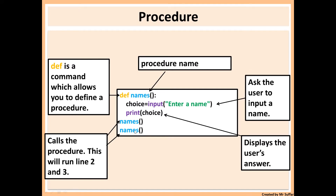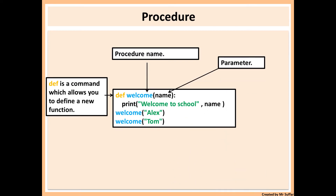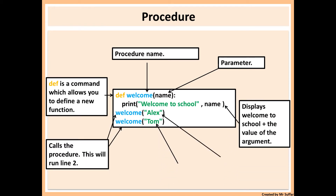Here we have another example. 'def' defines the procedure, and 'welcome' is the procedure name. We also have a parameter — a parameter is a variable used to receive data from the argument. It sits inside the parentheses of the function definition. The arguments are the values passed in at the bottom — here, 'alex' and 'tom' are the arguments passed into 'name'.